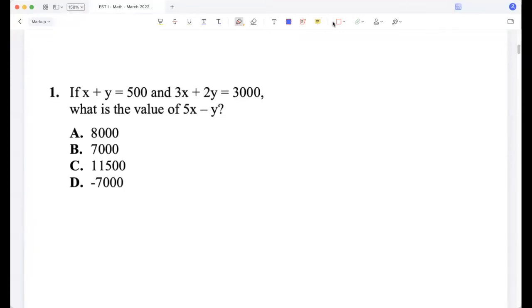Question one: if x plus y is 500 and 3x plus 2y is 3000, what is the value of 5x minus y? So x plus y is 500 and 3x plus 2y is 3000. So let's multiply this equation by 2.